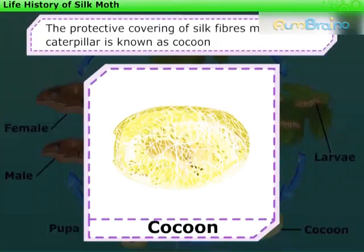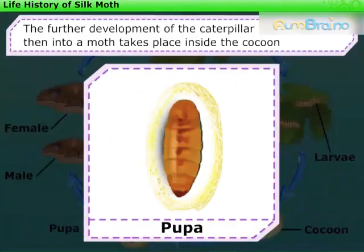These silk fibers form the protective covering known as cocoon. The further development of the caterpillar into a pupa, and then into a moth, takes place inside the cocoon.